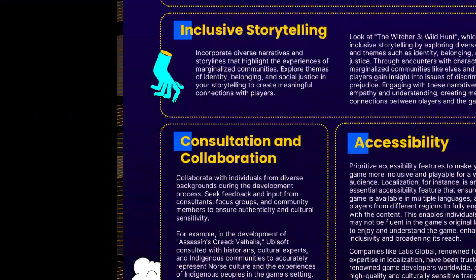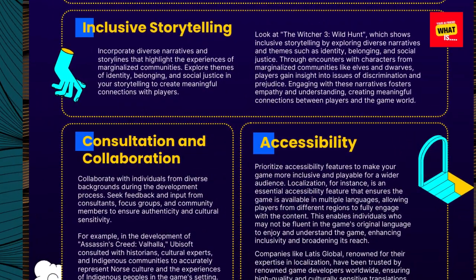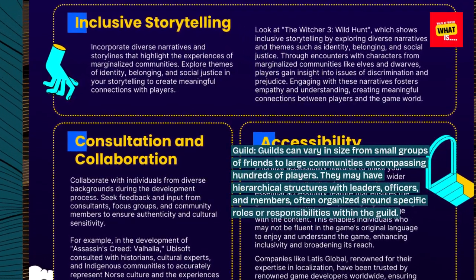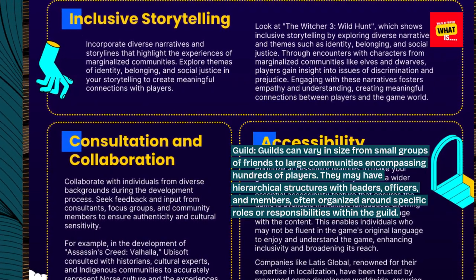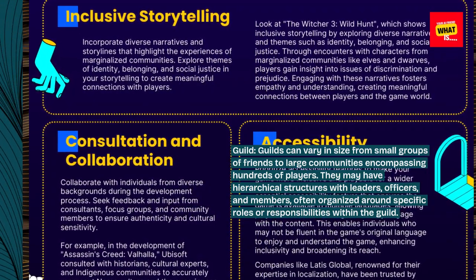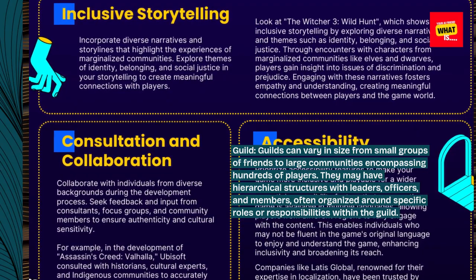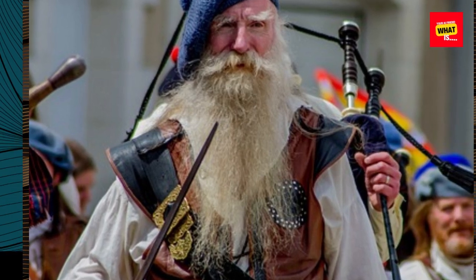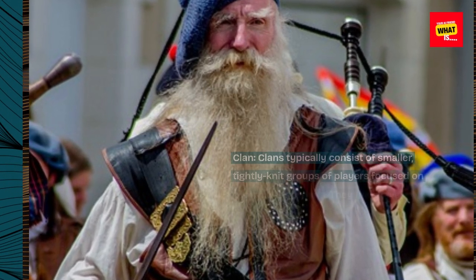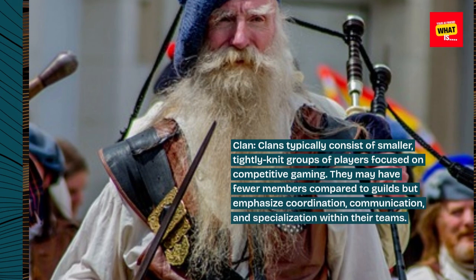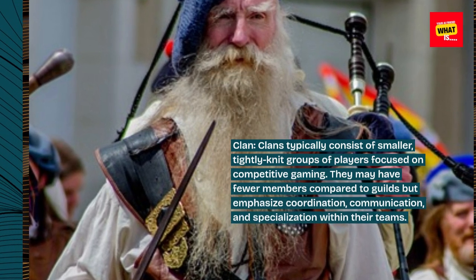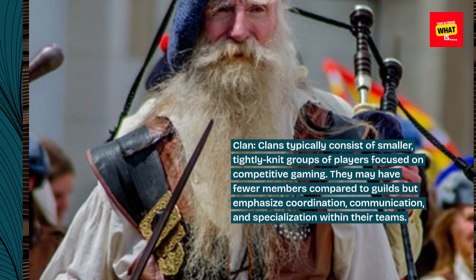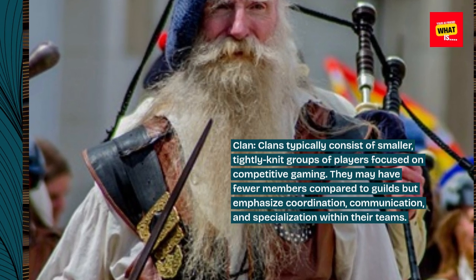Size and Structure — Guild. Guilds can vary in size from small groups of friends to large communities encompassing hundreds of players. They may have hierarchical structures with leaders, officers, and members, often organized around specific roles or responsibilities within the guild. Clans typically consist of smaller, tightly-knit groups of players focused on competitive gaming. They may have fewer members compared to guilds but emphasize coordination, communication, and specialization within their teams.